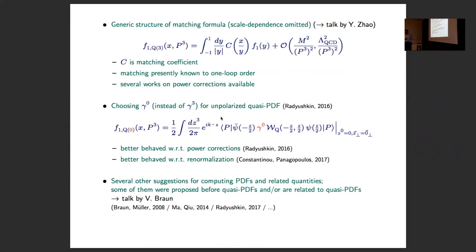This is a standard expansion, like the expansion between structure functions — it's precisely the same thing but for a different observer. If we want to do the same thing for the twist-3 part of the distribution, I think this has not been studied so far, but I believe it would also work.